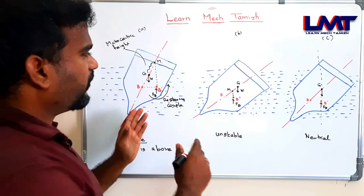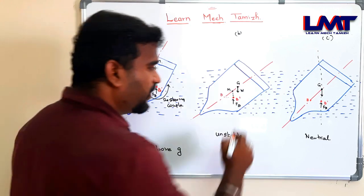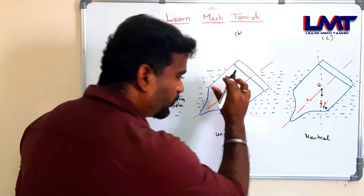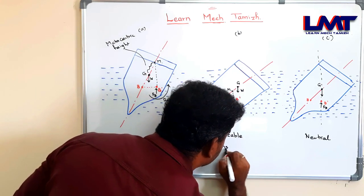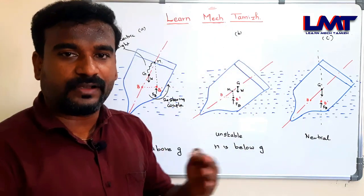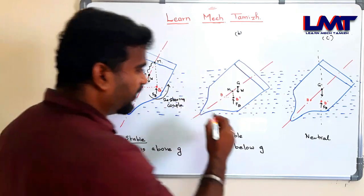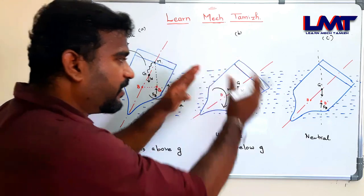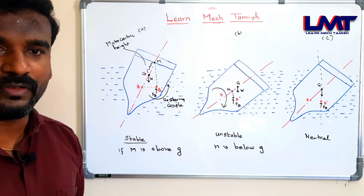Case 2 — Unstable Equilibrium: Now M is below G. The metacenter point is below the center of gravity. In this case, an overturning couple is created. The body does not return to its original position — it continues to overturn. The metacentric height GM is negative. This is called unstable equilibrium.